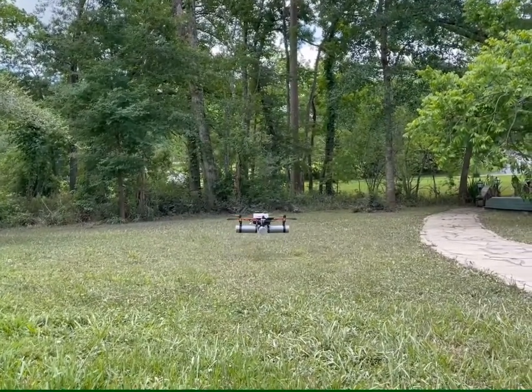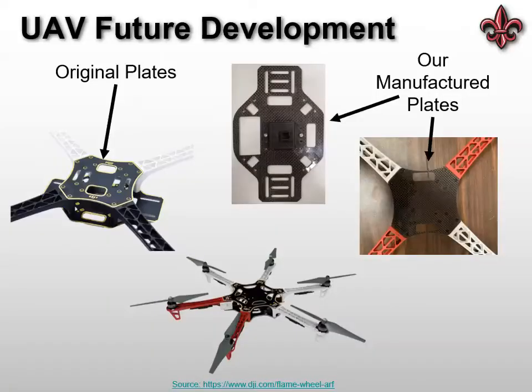During the design of our mobile sensor, important considerations were made for future development. One of which was to create a modular system that can be easily manipulated and improved upon by future teams for later competitions. The team chose to use a DJI F450 frame. This frame can be broken down to incorporate extra plates for storage and can also be easily converted to a hexacopter by simply purchasing additional arms and two new plates. There are many available CAD models online that could also be used if future teams wanted to manufacture their own plates, as we did.